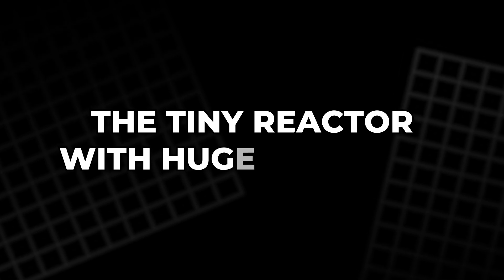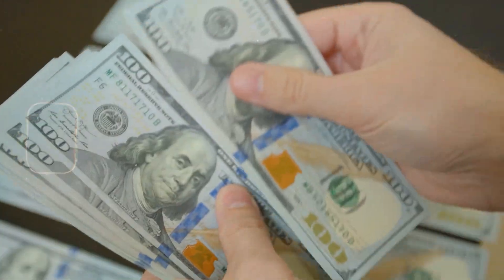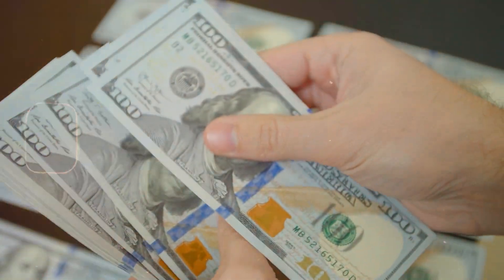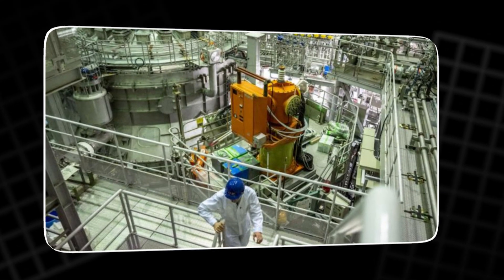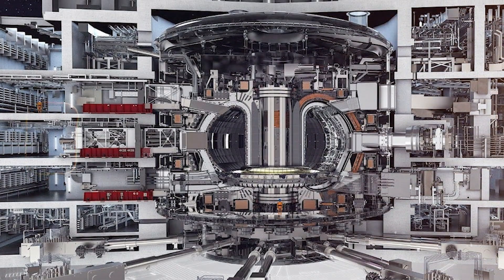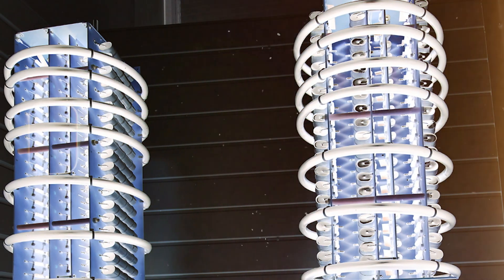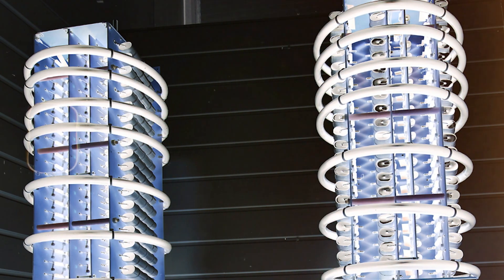The tiny reactor with huge potential. Forget skyscraper-sized reactors and billion-dollar construction sites. Astral's fusion system looks more like a high-tech appliance than a power plant. It fits on a table. It plugs into a wall. And yet inside, it does what once required entire buildings to achieve. It creates fusion.